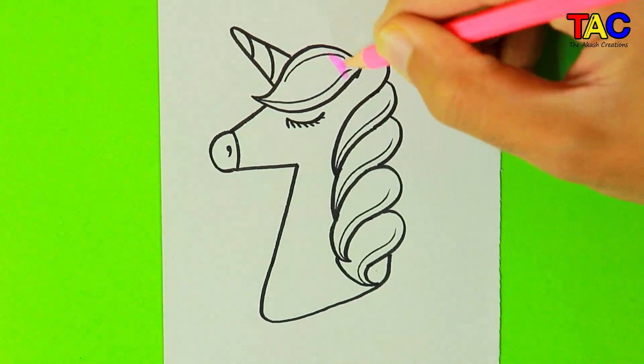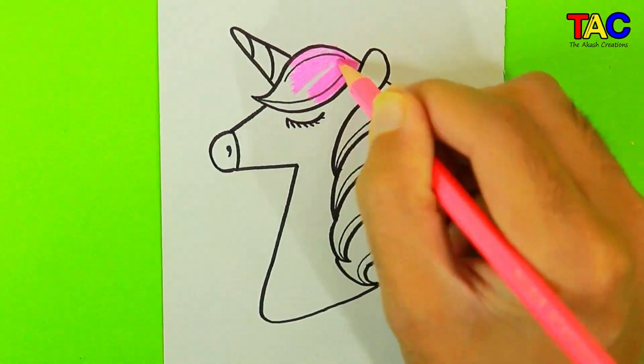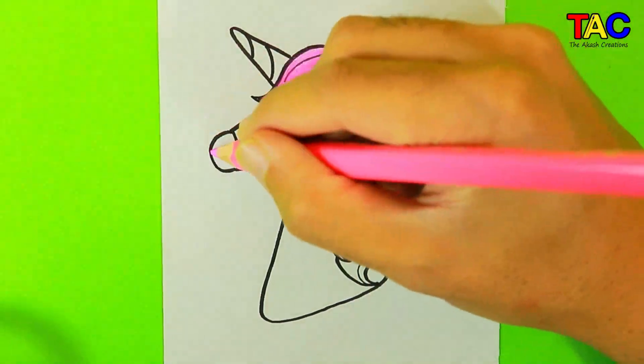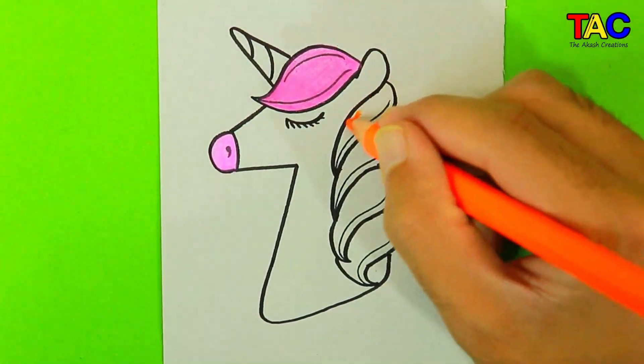You know that the unicorn is a legendary creature that has been described since antiquity as a beast with a single large, pointed, spiraling horn projecting from its forehead.